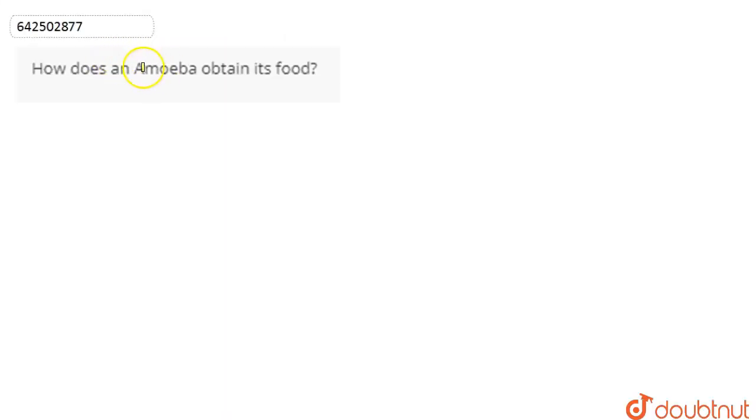In this question, we are asked: how does an amoeba obtain its food? So basically, amoeba ingests the food using its finger-like projections.